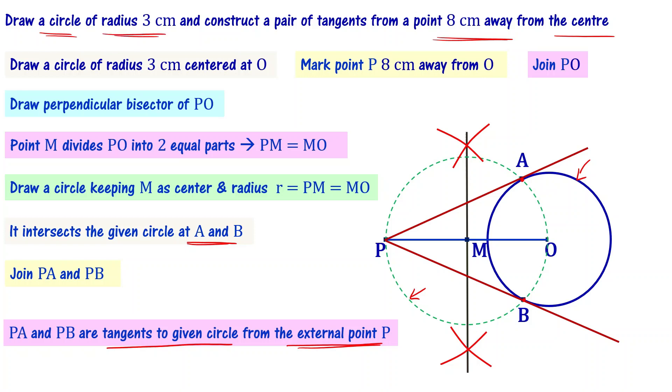Point P is 8 centimeters away from the center of circle of radius 3 centimeters. Understood? You have to write down all the steps also and perform all this so that you have two tangents AP and PB.